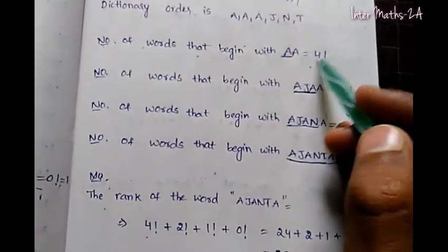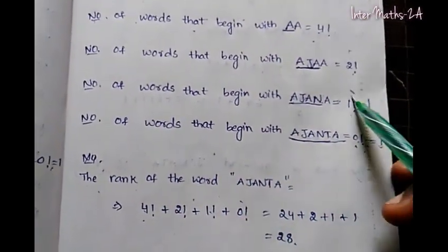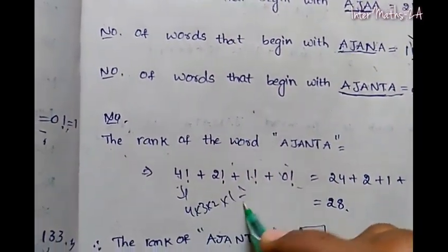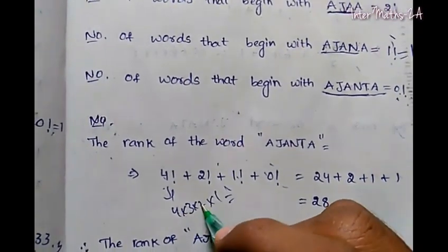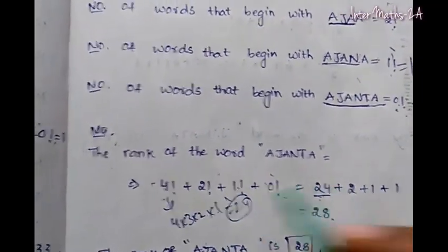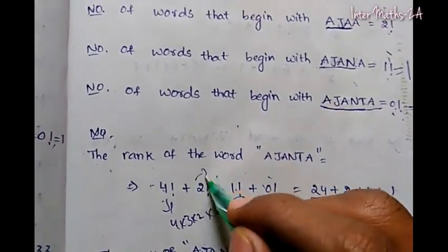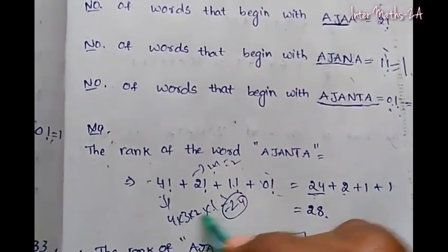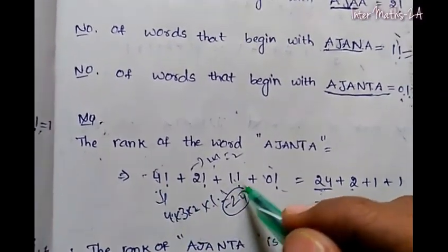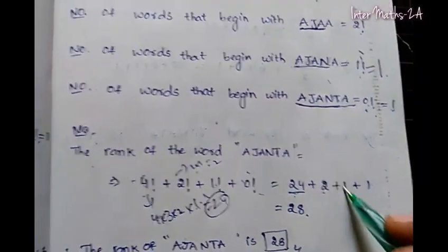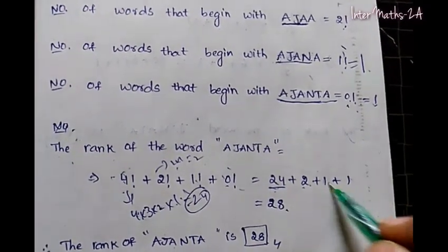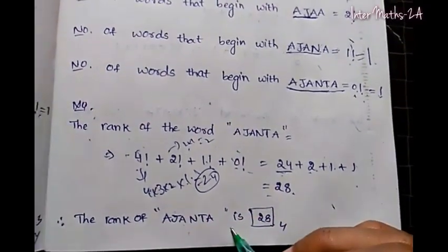Therefore, the rank of the word AJANTA is: 4 factorial plus 2 factorial plus 1 factorial plus 0 factorial. So 4 factorial is 4 into 3 into 2 into 1, which equals 24. Adding 2 factorial gives 24 plus 2 equals 26, plus 1 equals 27, plus 1 equals 28.